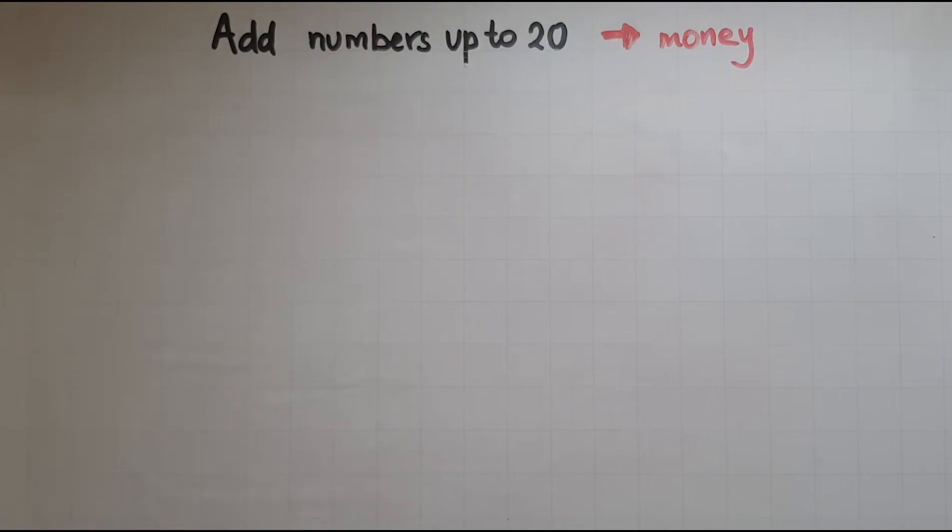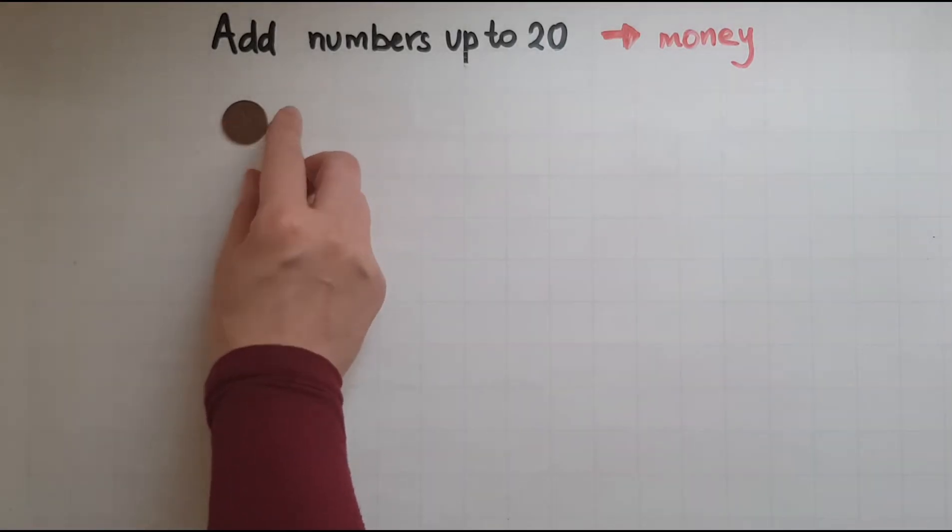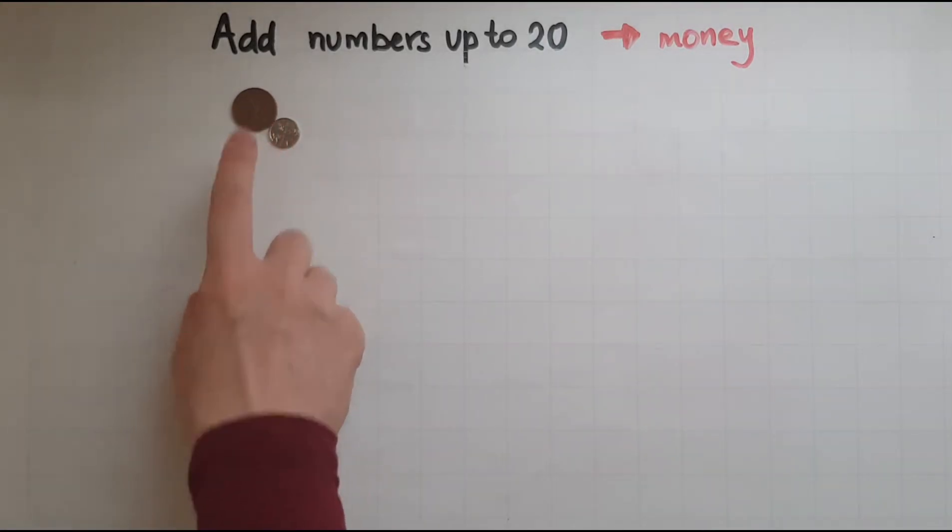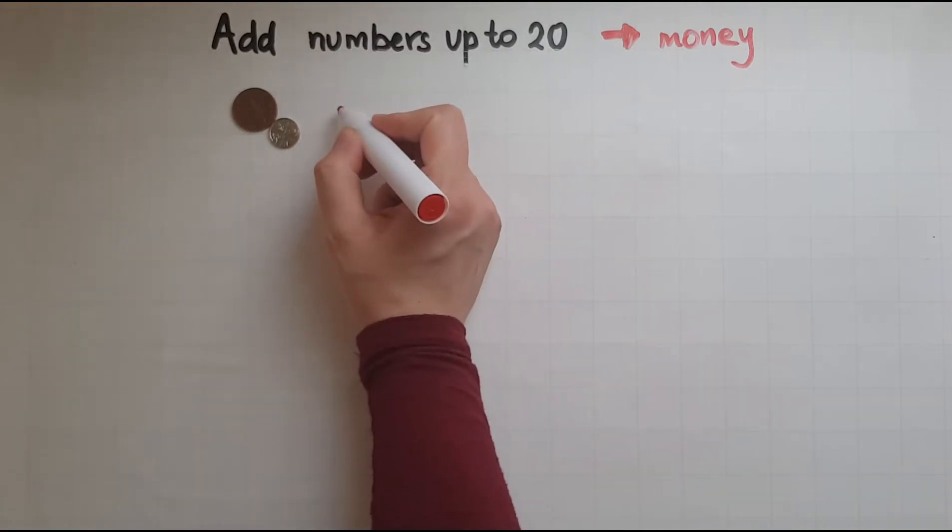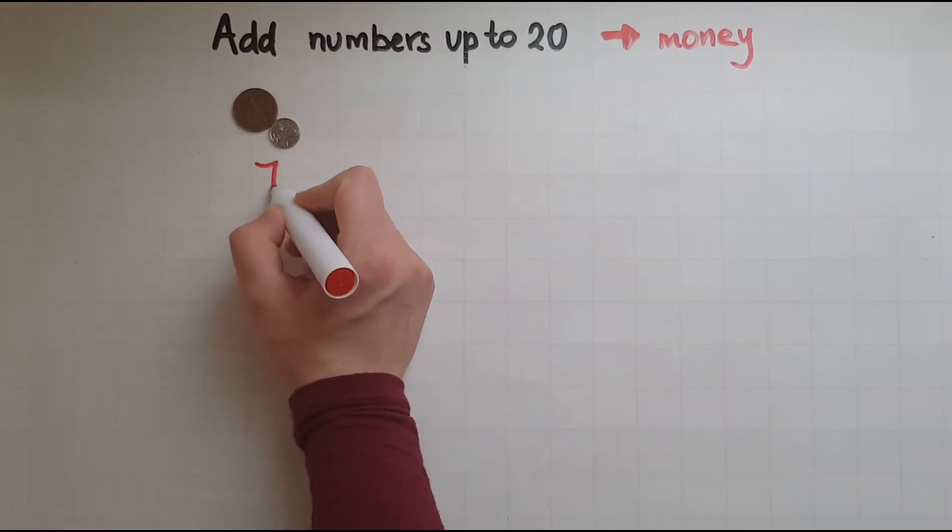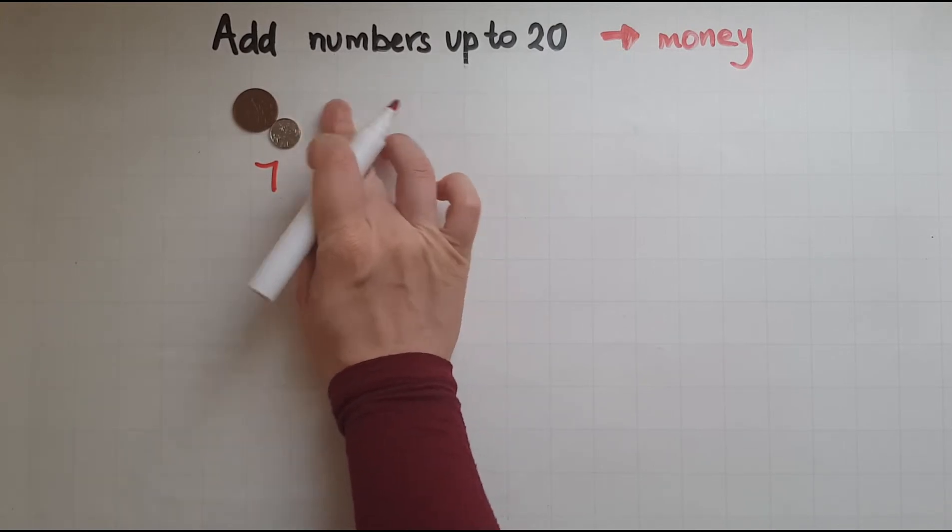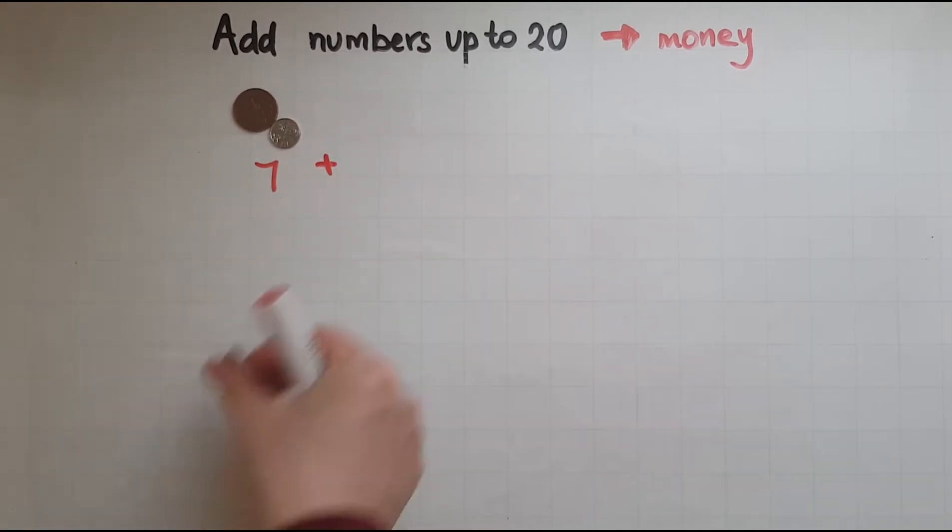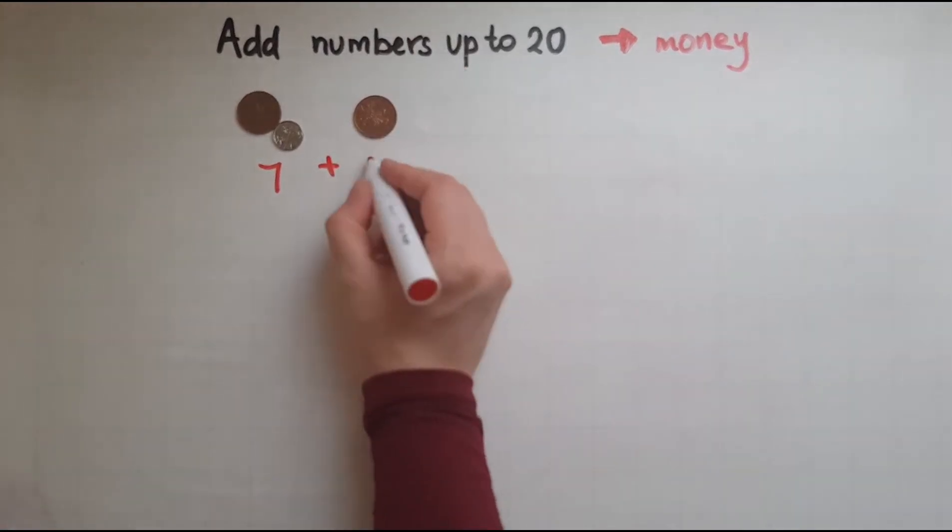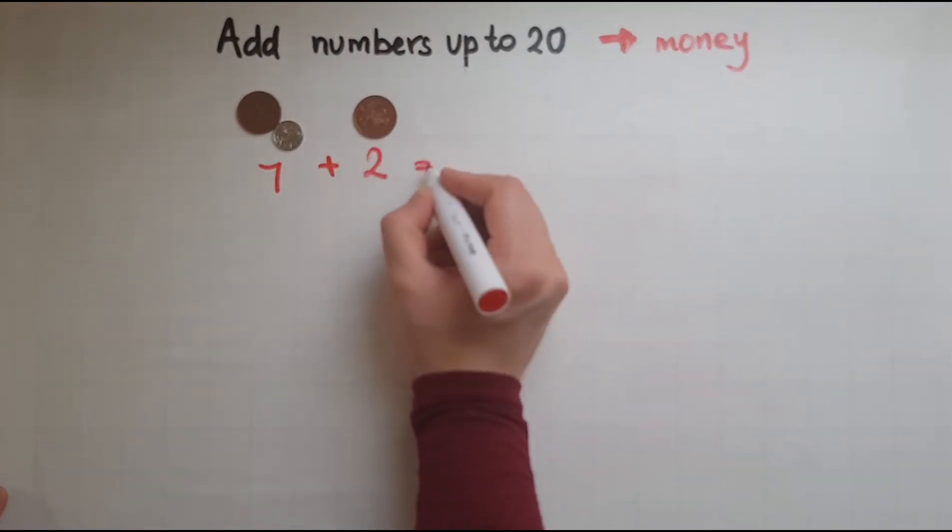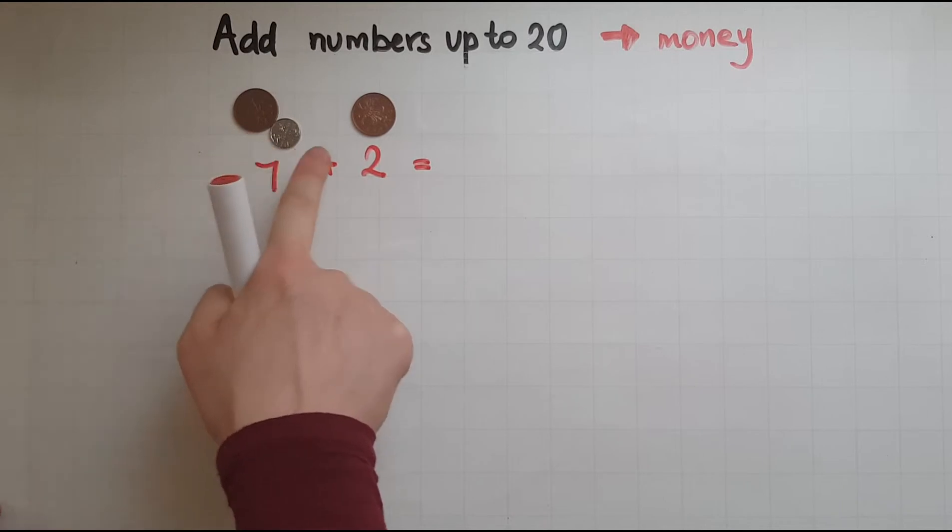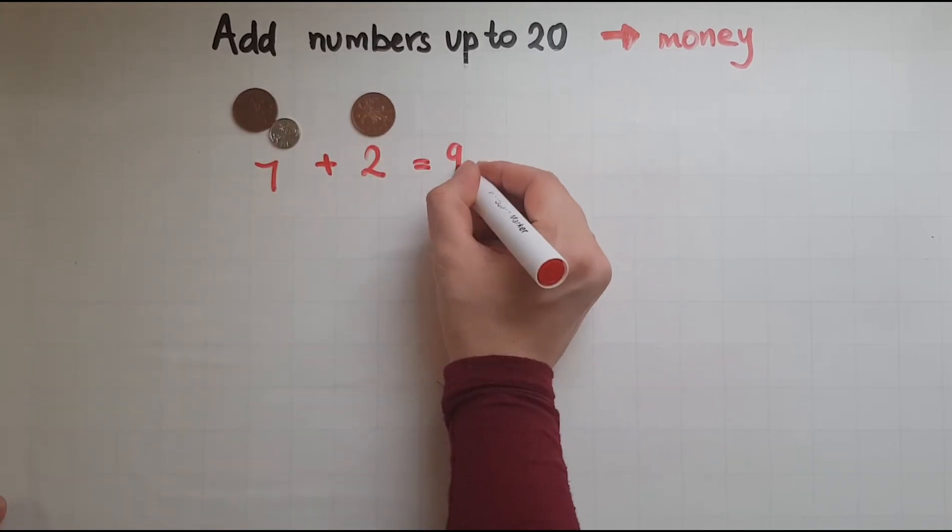So within that context, in one of my pockets I had this amount of money, so five and the two is seven, so I had seven pence. And in the other pocket I had two pence, so all together that's going to be seven, eight, nine, nine pence.